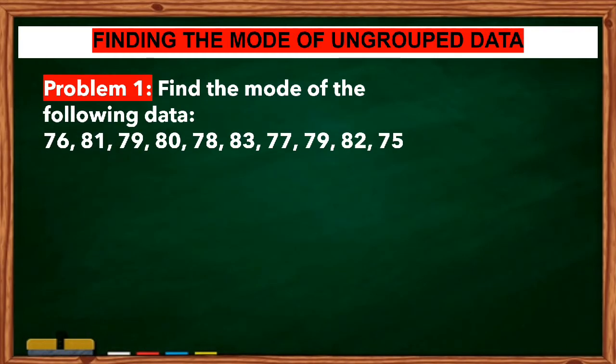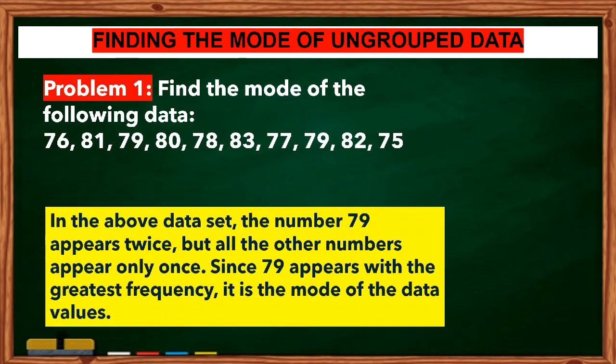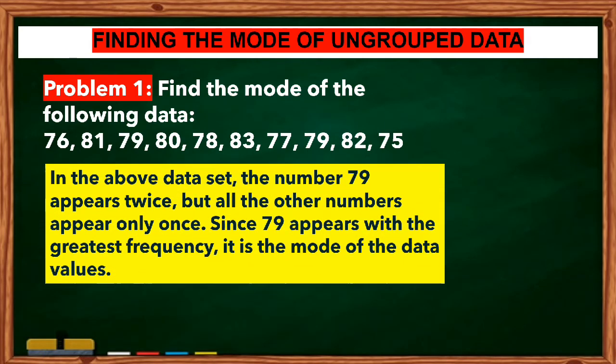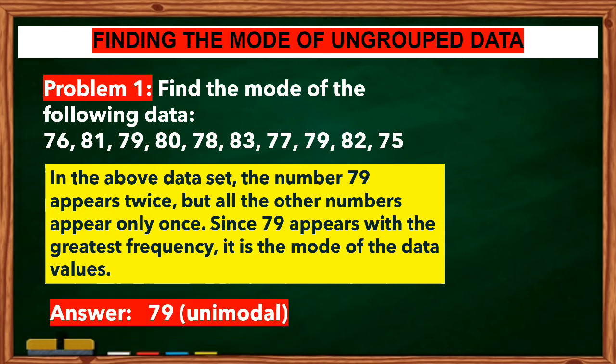Problem 1: Find the mode of the following data: 76, 81, 79, 80, 78, 83, 77, 79, 82, and 75. In the above dataset, the number 79 appears twice, but all the other numbers appear only once. Since 79 appears with the greatest frequency, it is the mode of the data values. The answer is 79 and it is unimodal.